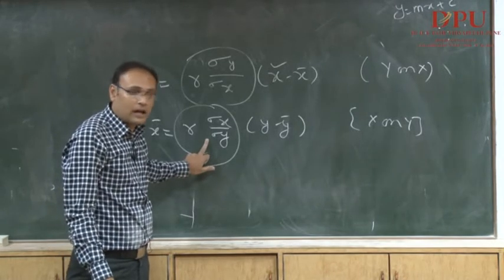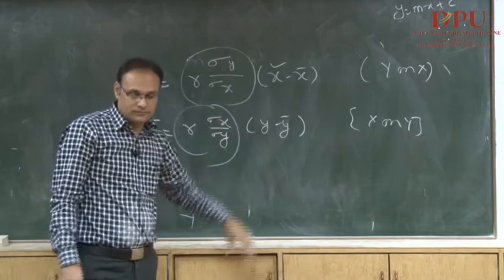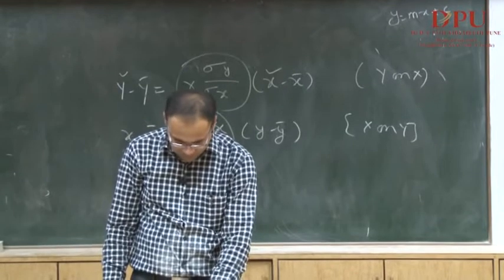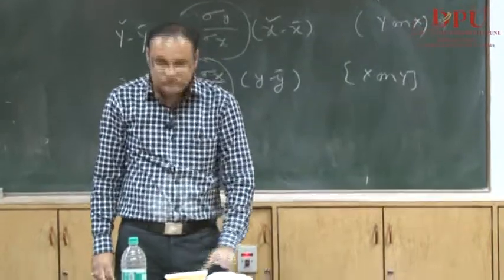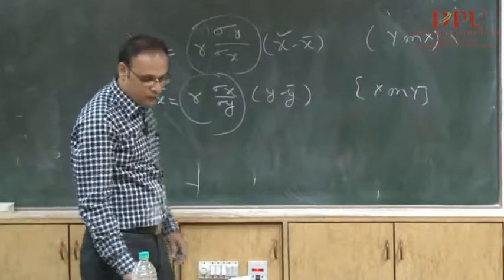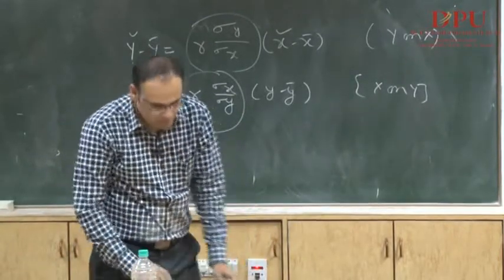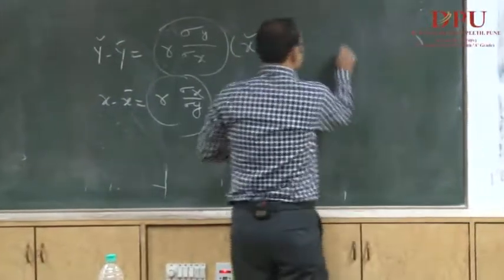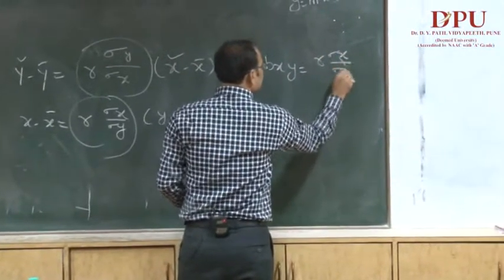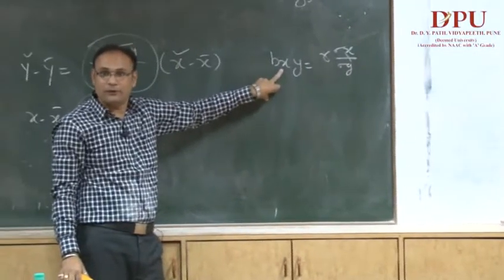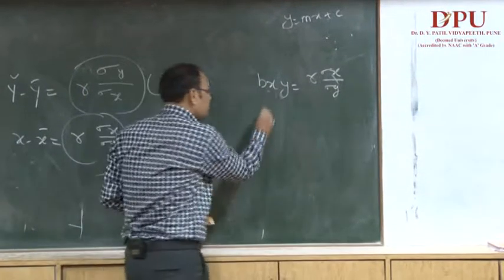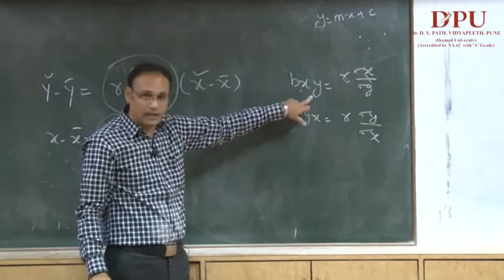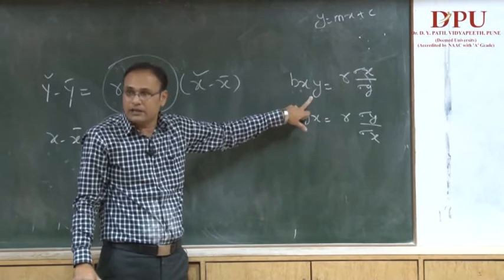The regression coefficient of x on y and regression coefficient of y on x can be represented as bxy and byx respectively. The formula is: bxy equals r times sigma x divided by sigma y, and byx equals r times sigma y divided by sigma x.